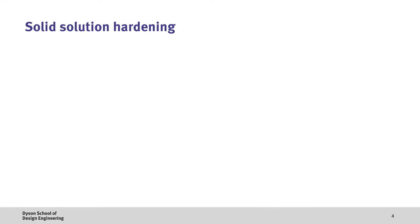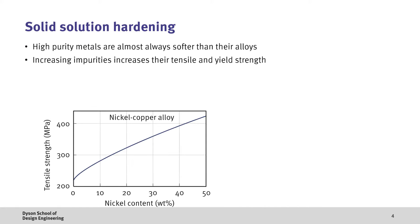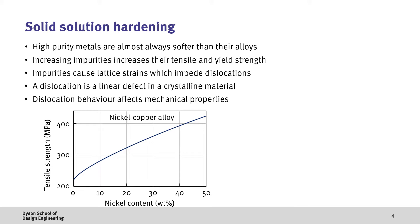So let's start with solid solution hardening. Now in nearly all cases high purity metals are softer than the alloys and increasing the amount of impurities increases their tensile and yield strength which you can see in the nickel copper alloy example. The reason for this increase in strength is due to the impurities in the material impeding the movement of dislocations. In crystalline materials a dislocation is a linear defect in the material and the ability for these dislocations to move is strongly correlated to its mechanical properties.